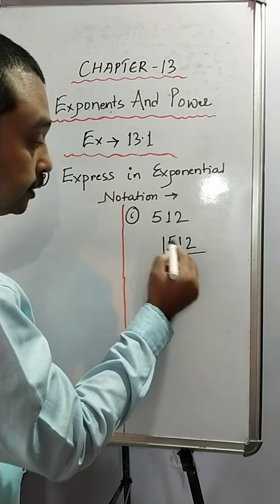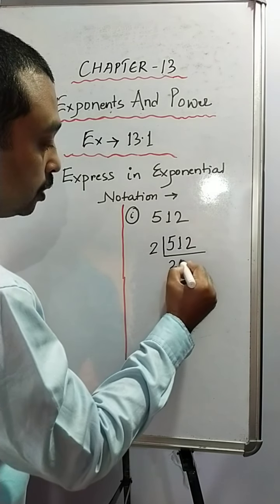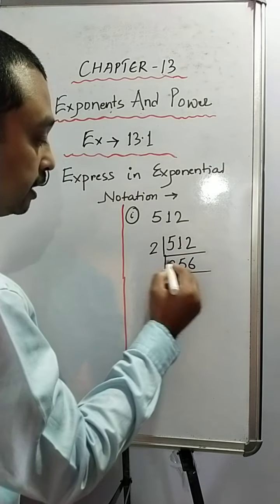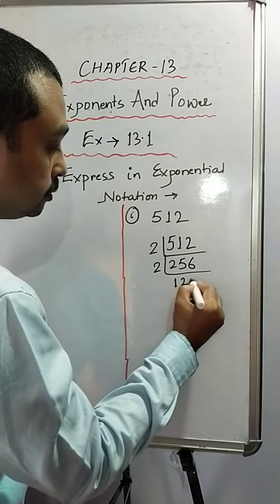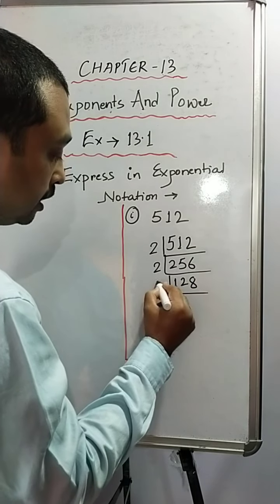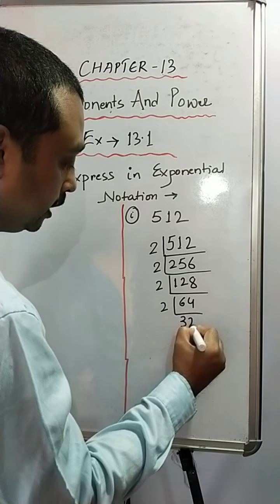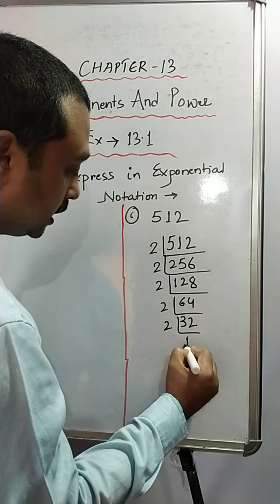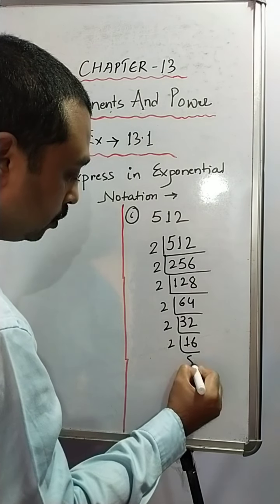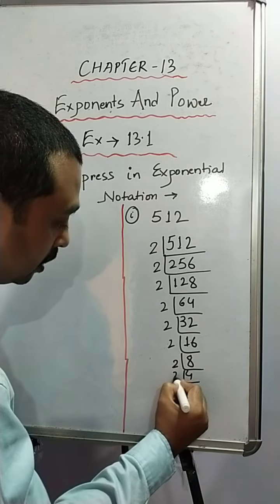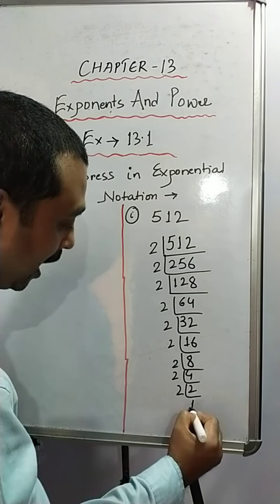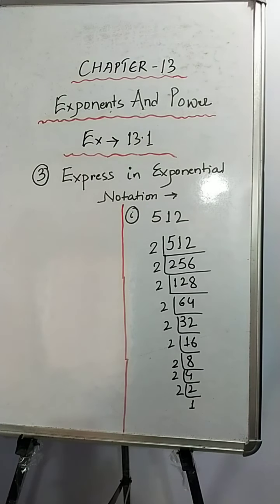That is, it is divisible by 2, so it will be 256, is again divisible by 2, 128, 2 into 64, 2 into 32, 2 into 16, 2 into 8, 2 into 4, 2 into 2 and 2 into 1. Big prime factorization, isn't it?